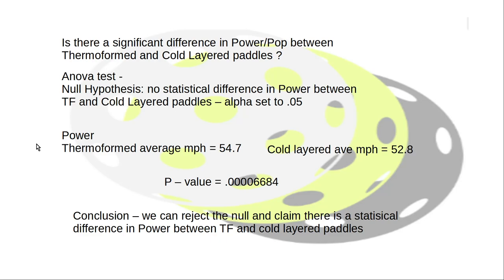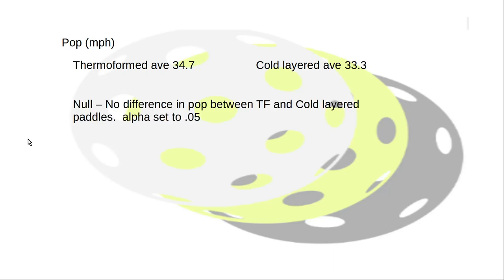We do the same thing with pop. Averages don't look all that different. Thermoformed is higher but not by much, and the null hypothesis is that there's no difference between thermoformed and cold layered. Alpha set to 0.05, and we're definitely below 0.05 for our p-value, so we have a statistical difference. We can reject the null and conclude that there's a difference in pop, statistically speaking, between thermoformed and cold layer paddles.